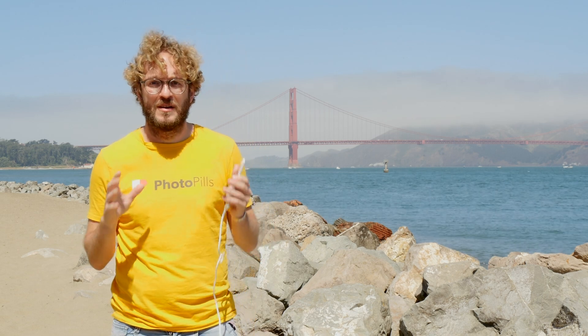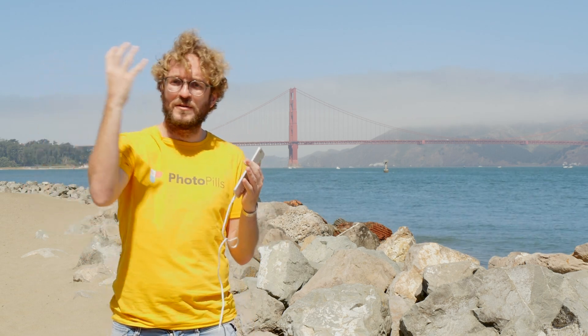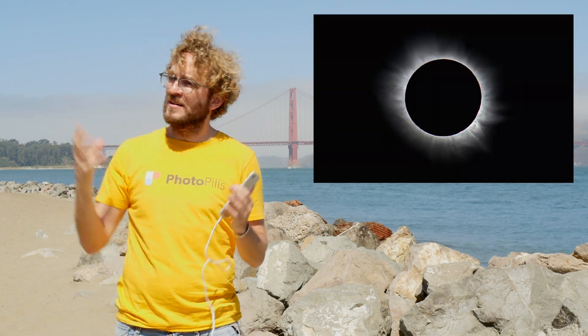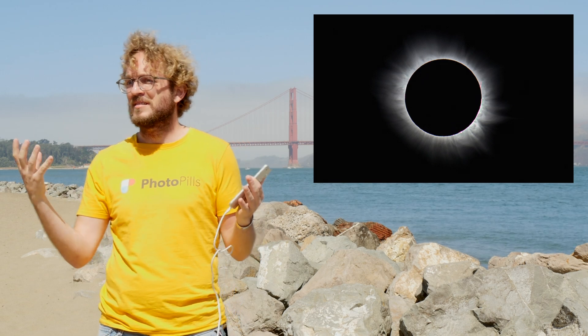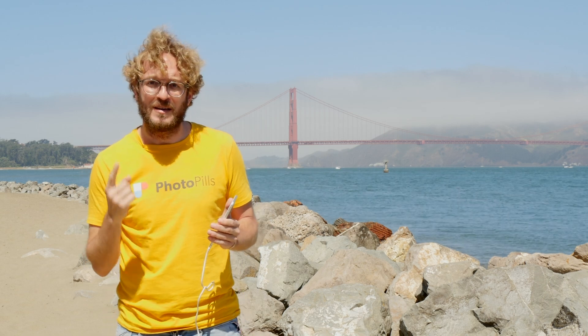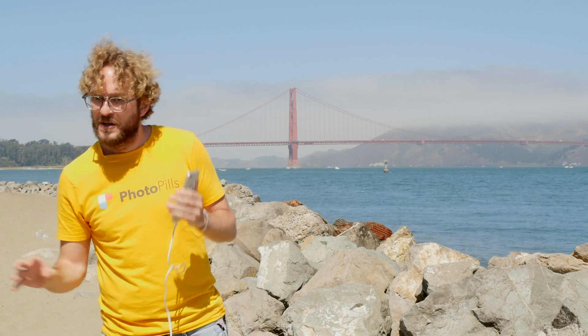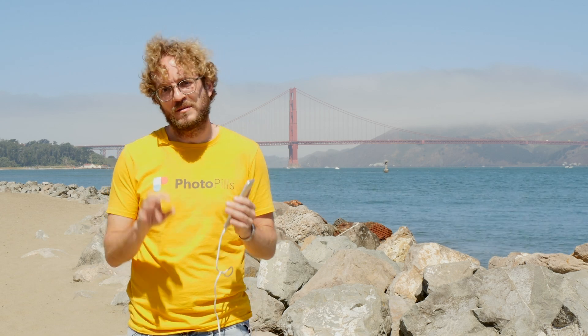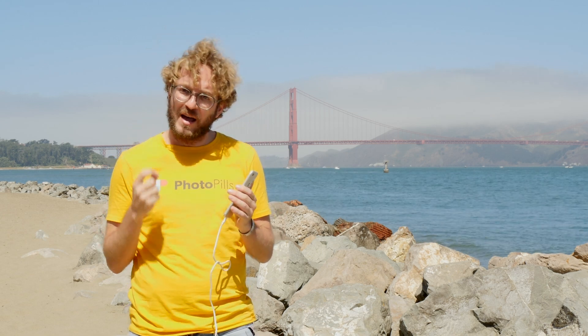Living a total solar eclipse is a unique experience. When the moon goes just in front of the Sun, covering it completely, the sky gets dark, you can see the stars, and you can see a ring of fire around the moon. The catch is that the total solar eclipse is not visible from anywhere — it's only visible in certain locations. Let me show you how to use PhotoPills to find where to go and when to go to see the total eclipse.